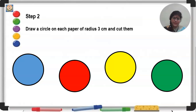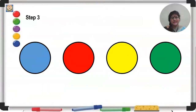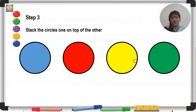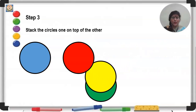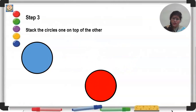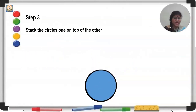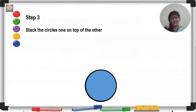Now see the third step. Step 3: once you have cut these 4 congruent circles, stack the circles on top of one another. The order in which you stack them is up to you — there is no specific order. Just take care that all the stacked circles coincide exactly with each other. They will coincide because they are all congruent circles.